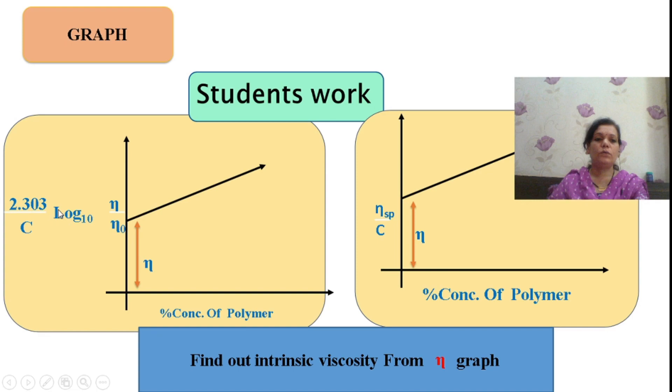Similarly, I can plot 2.303/c log η/η₀ versus concentration of polymer and the intersect value will again provide me molecular weight.